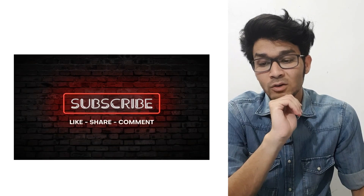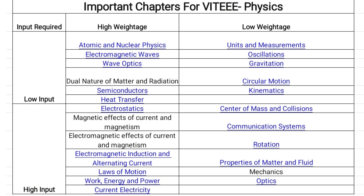In Physics, high weightage topics include: atomic and nuclear physics, electromagnetic waves, wave optics, dual nature of matter and radiation, semiconductors, and heat transfer. Their weightage is high but you don't need too much effort as these topics are relatively easy. Low weightage and low input easy topics are: units and dimensions, oscillation, gravitation, circular motion, and kinematics.